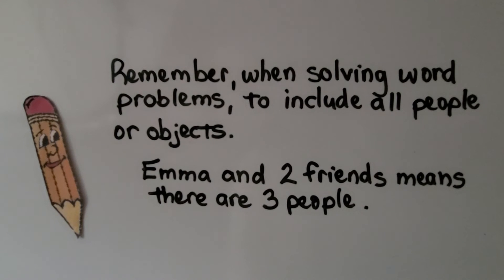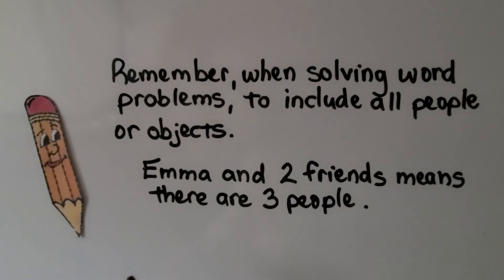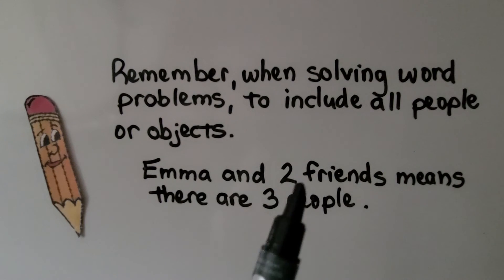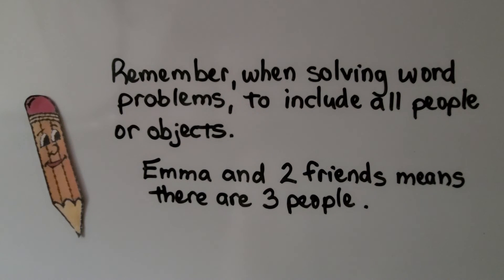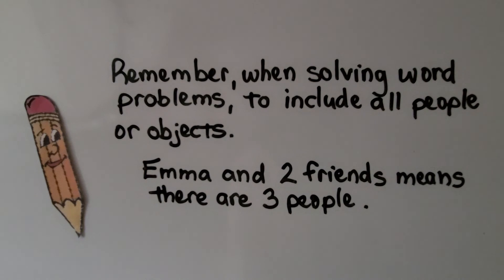There are a couple of word problems in this unit. Remember, when solving word problems, include all people or objects. If the problem says Emma and two friends, that means three people — Emma is one and two more. So if it says Bill and four friends, that's five people. Read carefully and make sure you're including everyone.